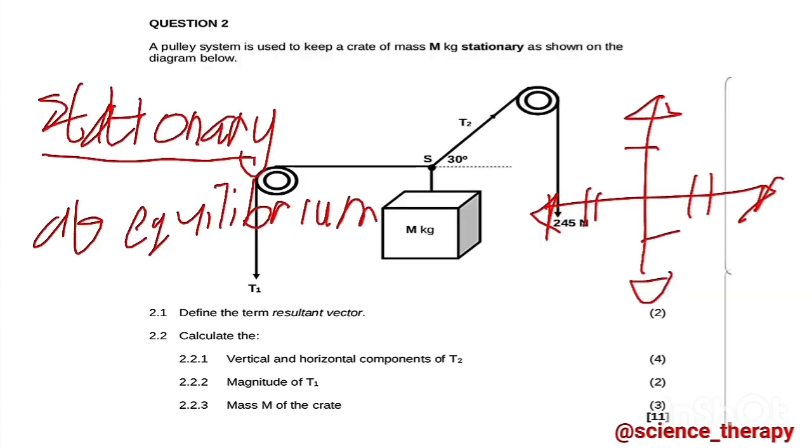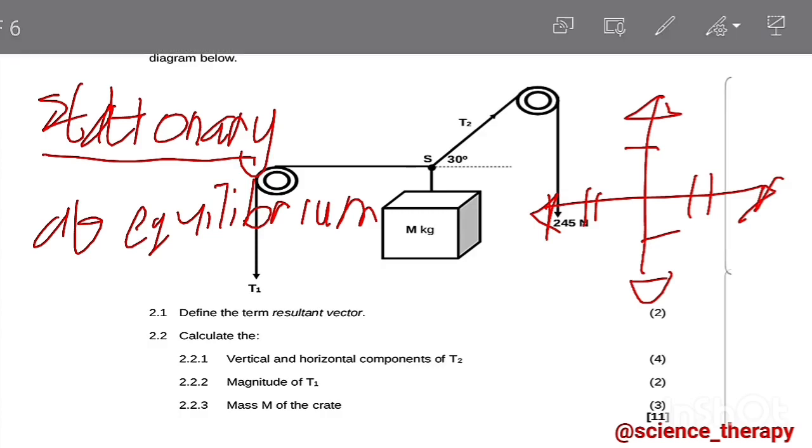Then 2.2 says calculate the vertical and horizontal components of T2. We already know that now. Checking T2, we can see that it has been acted at an angle, and the angle comes from the x-axis, the positive x-axis. Remember we only resolve forces that have been acted at an angle. Now let's go and calculate.